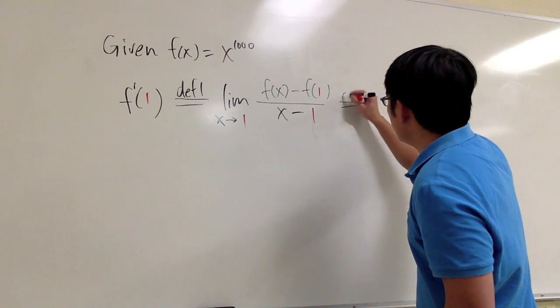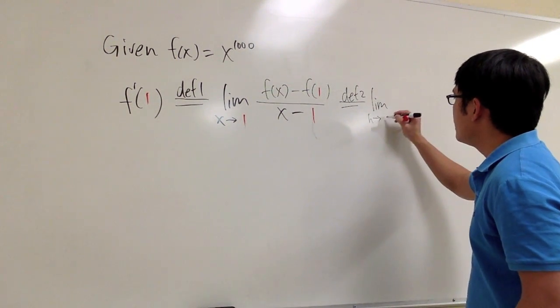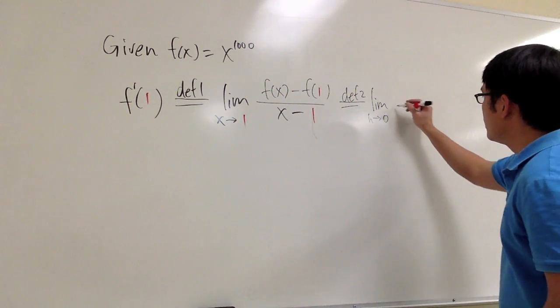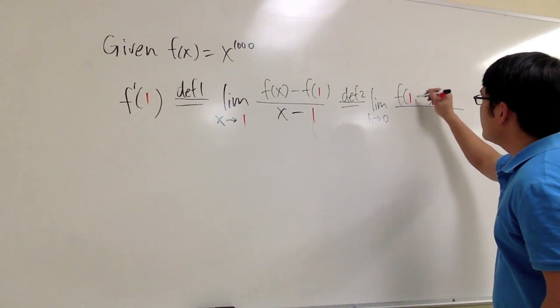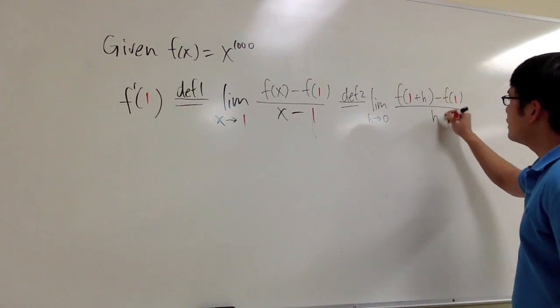We also have definition 2, and definition 2 is the one with h. This is the limit as h goes to 0, and we will have f of 1 plus h minus f of 1 over h.